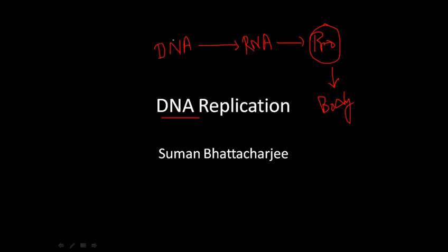To carry on the central dogma of biology, we need to produce more and more DNA because we need the information. The reason is: if we want to share information from one generation to another, if we want to donate information to our offspring so they can carry on the same type of proteins and form a life cycle like we do — that's why we need to produce DNA from DNA. The production of DNA from DNA is called DNA replication.